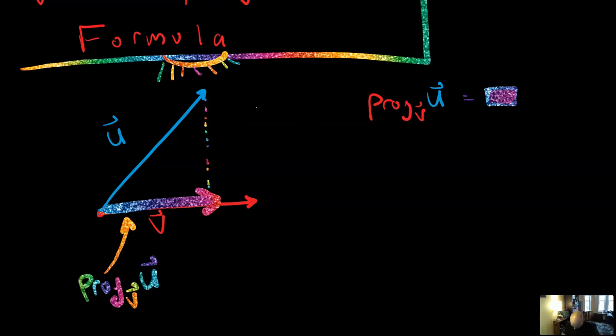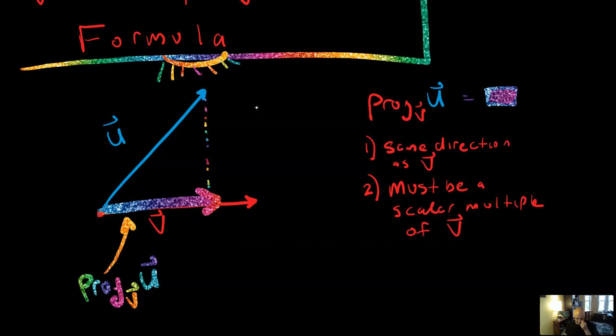There's a couple things to note about the projection. Thing one to note: it's in the same direction as vector V. And the consequence of that, thing two, is that it must be a scalar multiple of vector V. So whatever this projection is, even though U is kind of the main vector, this is actually just going to be a scalar multiple of V. So like right here, for example, this looks like about three quarters vector V. And so vector V contains the direction and then this other part contains the size.